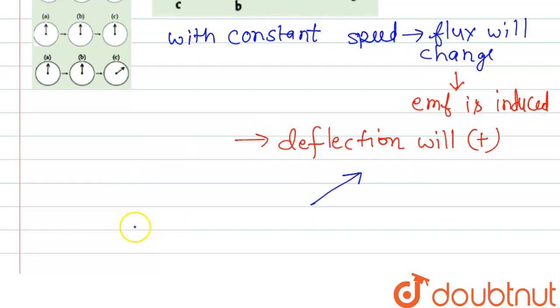Now in the second case, when the magnet is in the middle, here there is no change in flux.